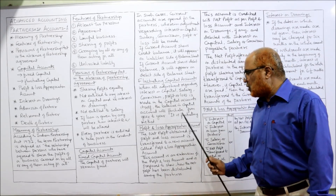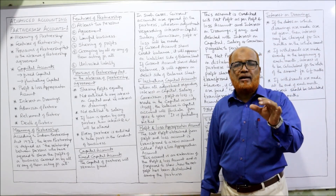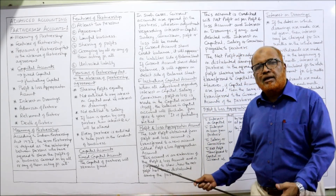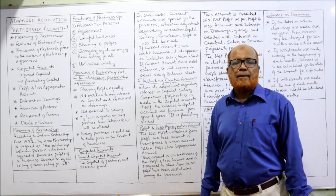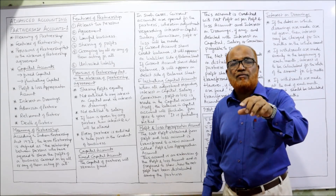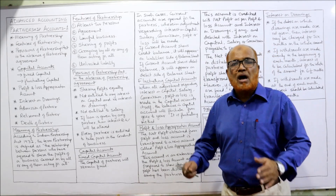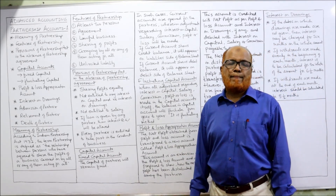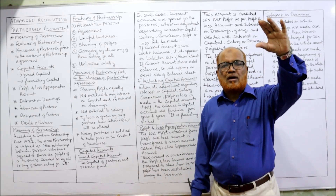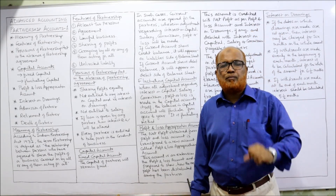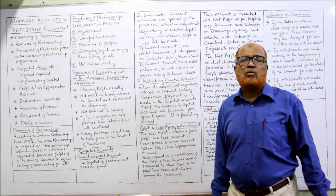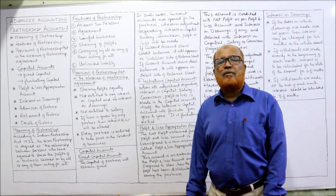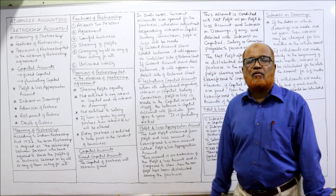Now, the next point is the profit and loss appropriation account. In case of a sole trading concern, whatever profit is earned, the whole profit is added to capital directly. But in a partnership, there are two or more owners, so first we calculate the profit, then we distribute it among the partners — that is, appropriate the profit. A new account is opened called the profit and loss appropriation account. First, a profit and loss account is prepared as usual to find out the net profit. After calculating net profit, one extension account is opened — the profit and loss appropriation account — whose main purpose is to show the division of profit among the partners.